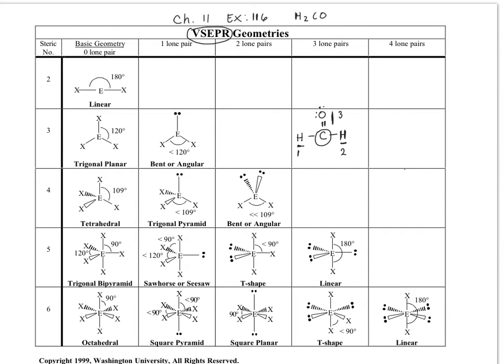The electron group can refer to a double bond, a single bond, or a lone pair that's on the central atom. So we have one single bond, another single bond, and we have a double bond. So that's three electron groups.